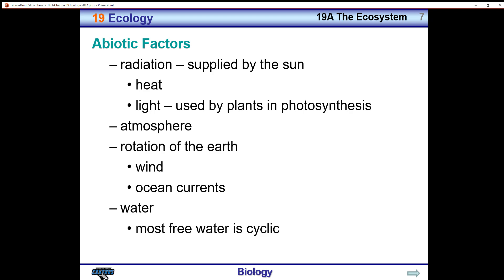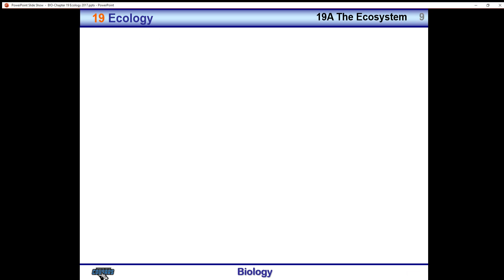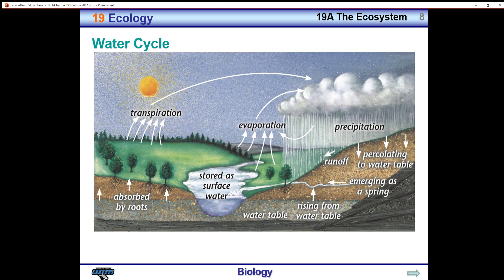Most free water is cyclic — it's part of a water cycle. Since it's a cycle, you can begin almost anywhere in the process to understand it. Let's begin on the left, where heat from the sun causes plants to transpire, which means to give off moisture.